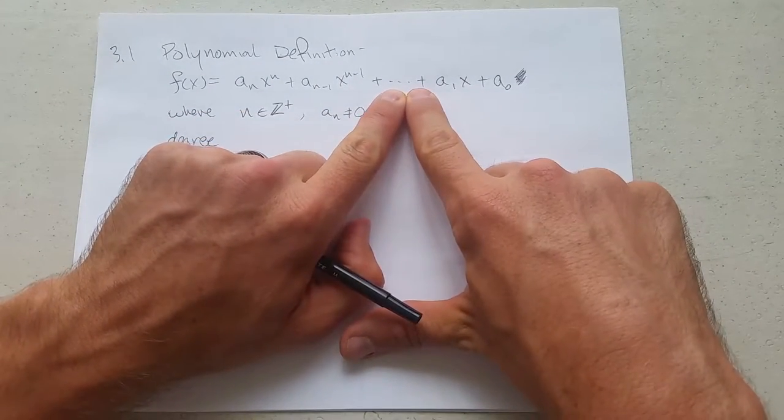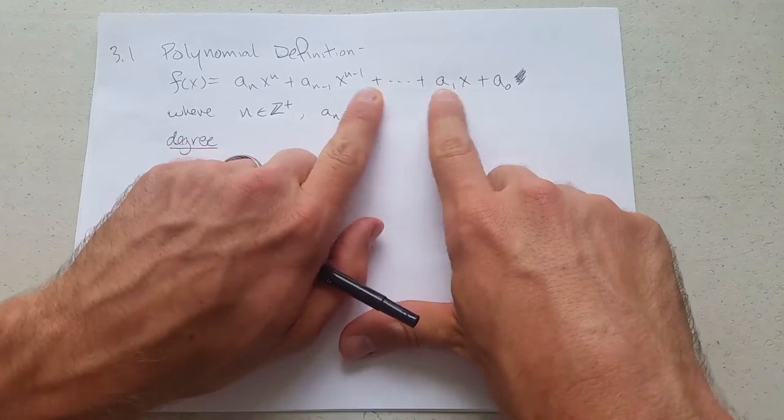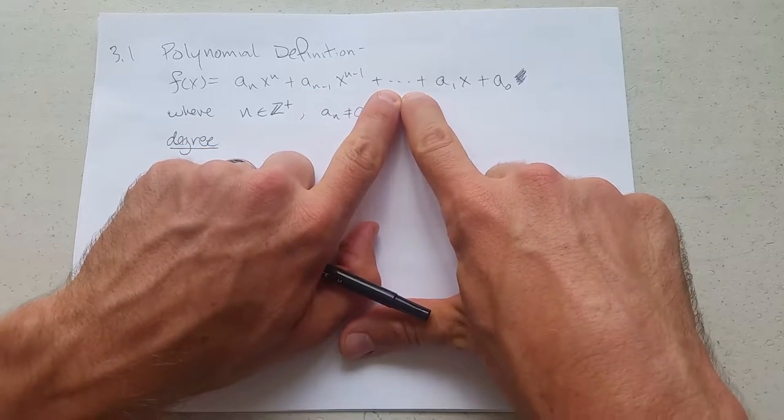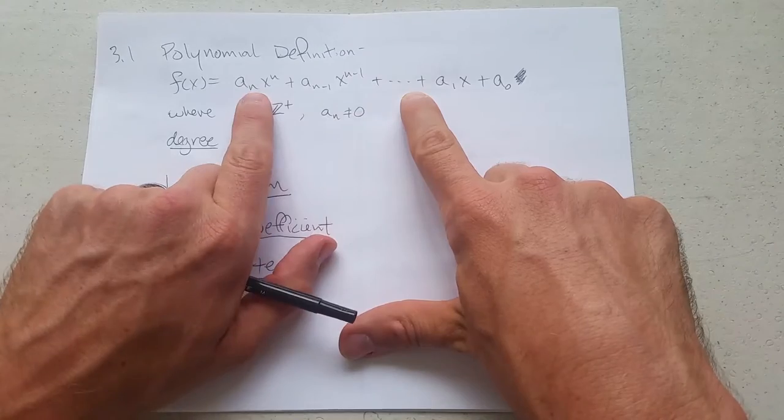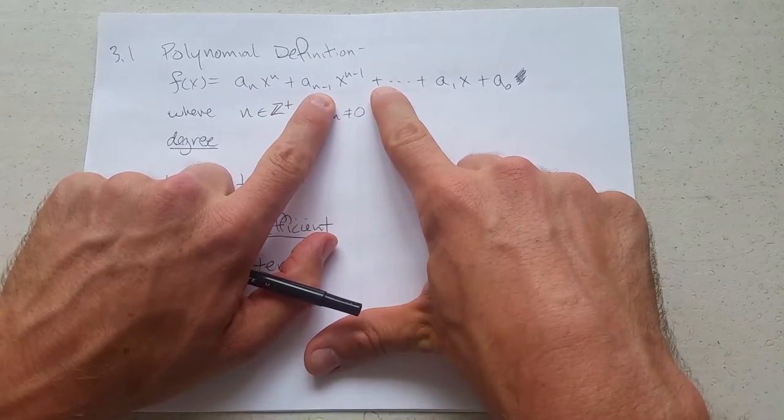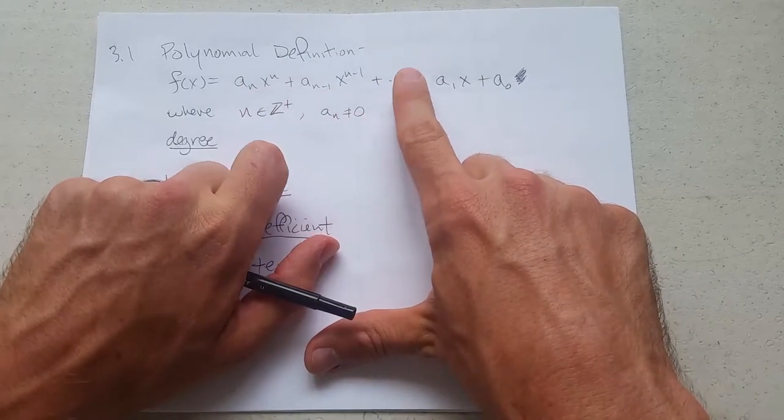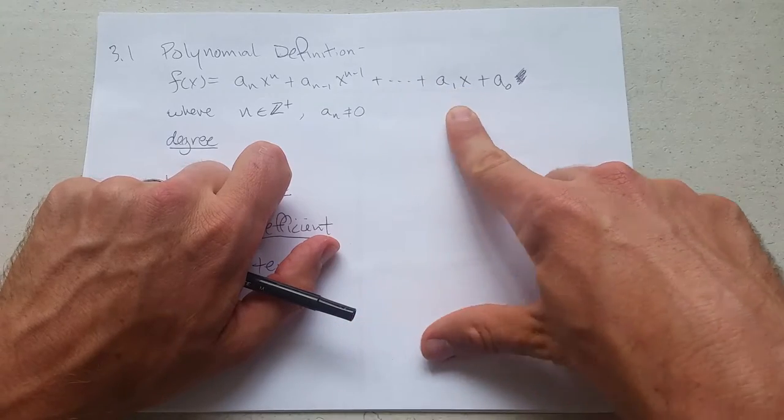There's a new symbol here, dot dot dot. What does that mean? That means there's a pattern happening and just continue the pattern. What pattern is it? n, n minus one, then n minus two, n minus three, etc., until you get to one and zero.